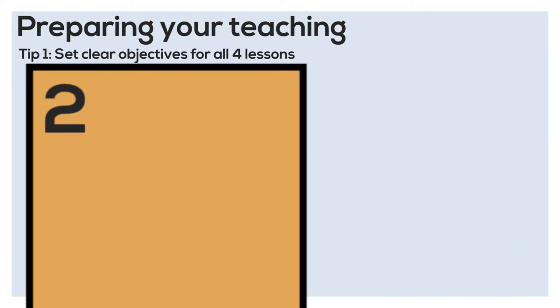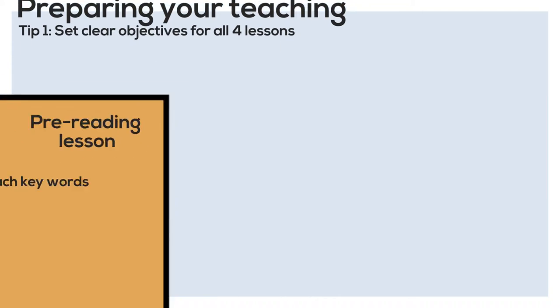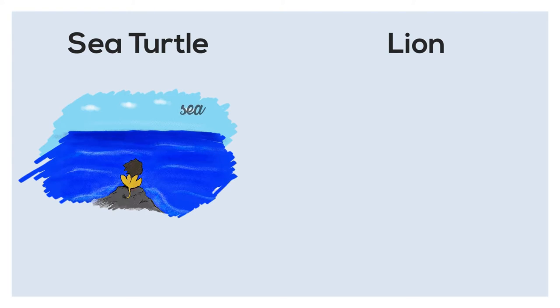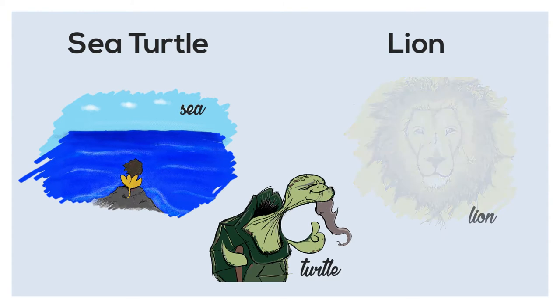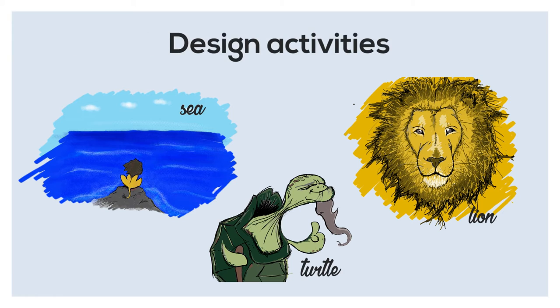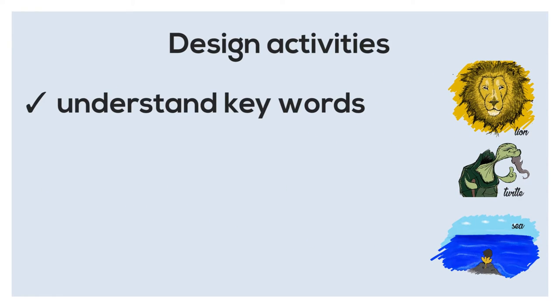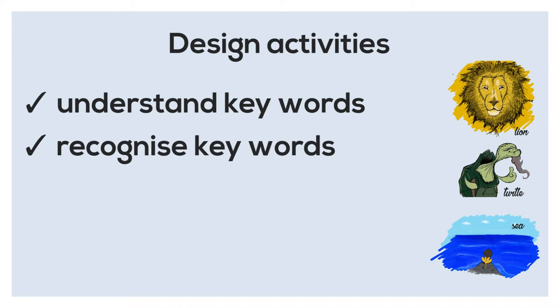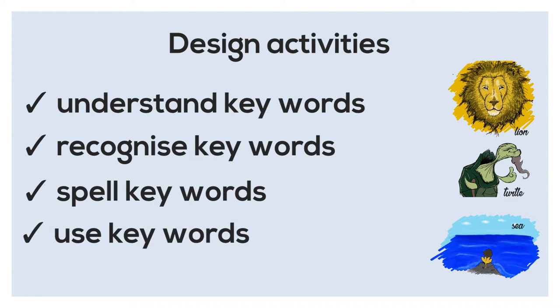Having warmed them up, your next step is to teach them the key words in your story, which is what we do in the pre-reading lesson. You cannot teach your story before helping students understand the key words in the story. For example, if the main character in the story is a sea turtle and a lion, you would need to teach the words sea, turtle, and lion before the students read the story. You should design activities to help students understand the meaning of the words, recognize the words, spell the words, and use the words.